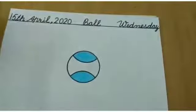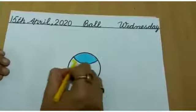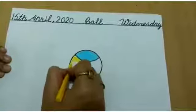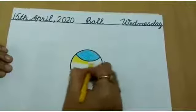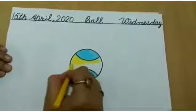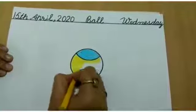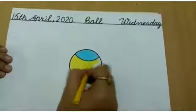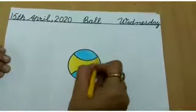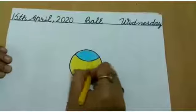Now take the yellow color to color in the center of the ball. Again do the coloring side to side in the same direction. You have to follow the same direction as I am doing.